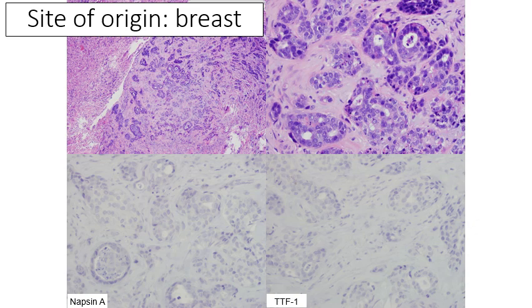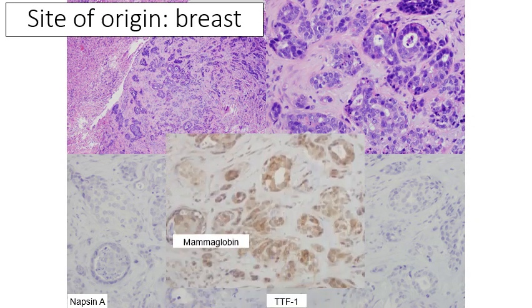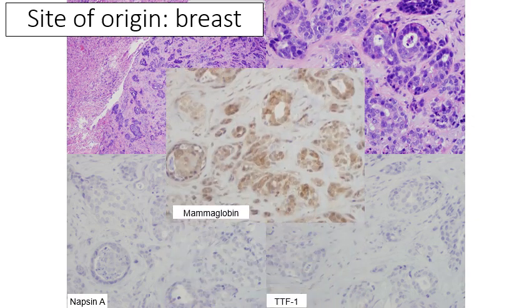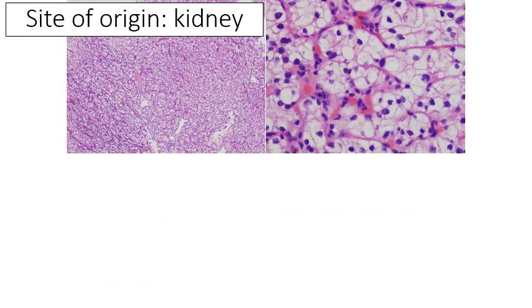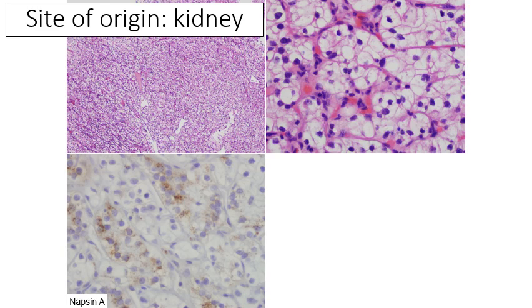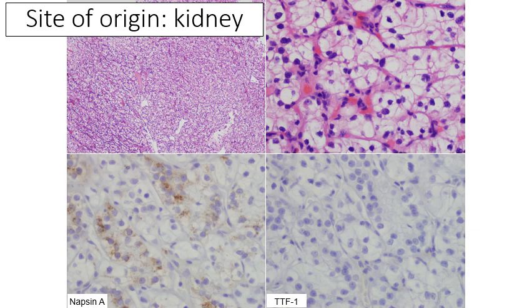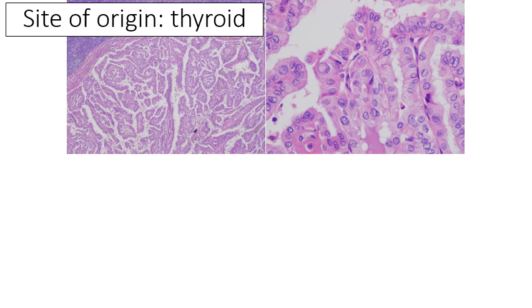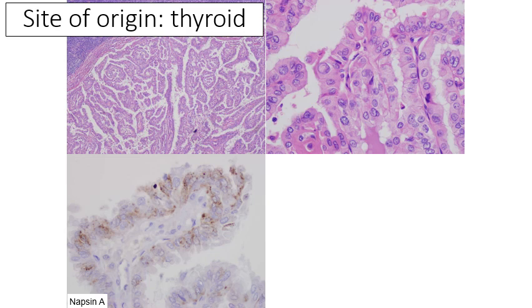Here's a case where the site of origin was breast: TTF1 is negative in this tumor, and mammoglobin was positive, supporting breast origin. Nowadays we would use GATA-3 either alone or in combination with mammoglobin. In another case, the morphology suggests kidney origin: renal cell carcinomas can be positive for napsin A — which is a pitfall — but they are not positive for TTF1, so TTF1 is very helpful in that setting.